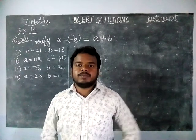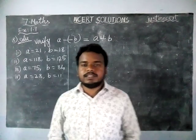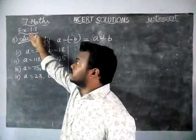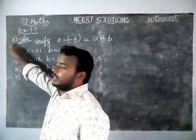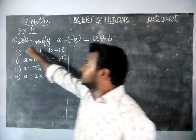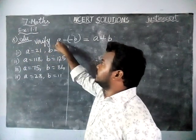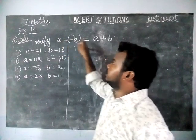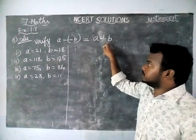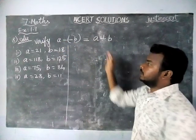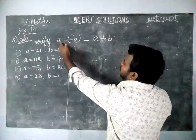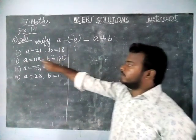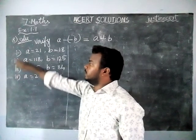Hi students, welcome to MCRT solutions. Today we are going to see 7th standard maths exercise 1.1. Verify A minus minus B is equal to A plus B. We have to verify that the left hand side is equal to right hand side for the given values. Four options are given.